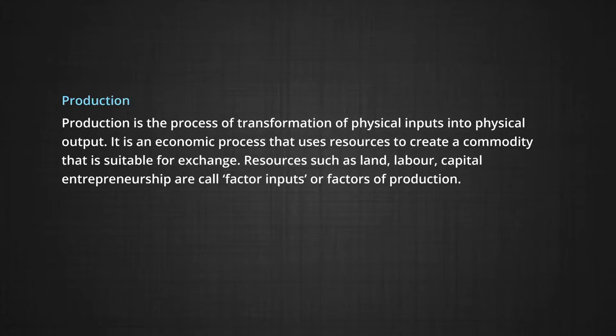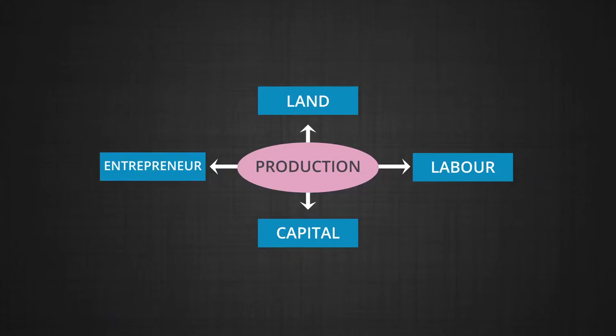Resources such as land, labor, capital, and entrepreneurship are called factor inputs or factors of production. Land typically includes all natural resources. Capital includes all manmade resources that are used in production, such as machines, tools, factories, etc. Entrepreneurship or enterprise is what brings various factors together to organize production. In other words, production represents the process through which different factor inputs combine to produce goods and services which are used to satisfy human wants.